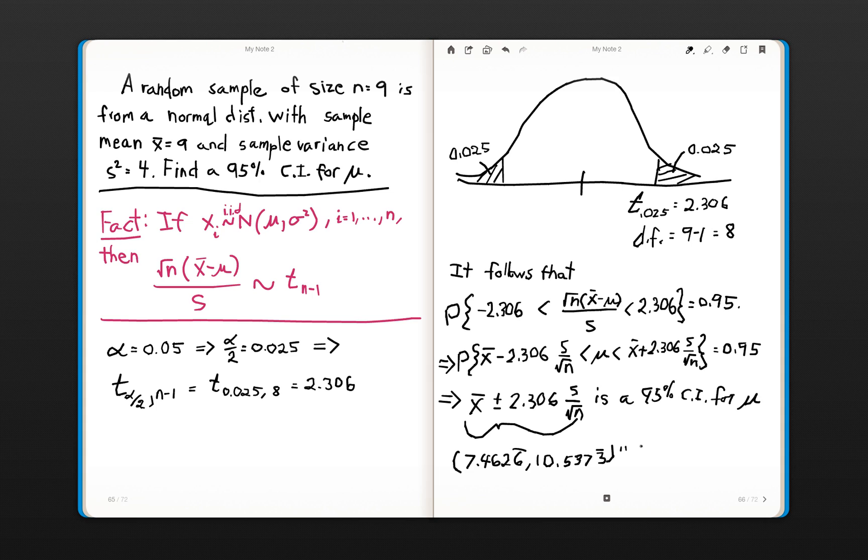And then our upper confidence limit is 10.5373. And that is a 95% confidence interval for our mu. Okay, thank you very much.